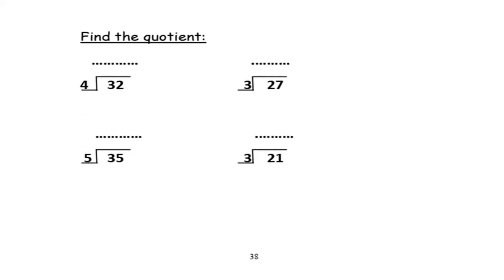The second question here is: find the quotient. Find the quotient means find the answer. Here, 32 divided by 4. The number after the sign — or the number outside the division house — is 4, so I will circle 4. I will sing the song of table 4 and write the answer up. Close your hands and sing the song of table 4 until you get 32: 4, 8, 12, 16, 20, 24, 28, 32. How many fingers? They are 8. So the answer will be 8.